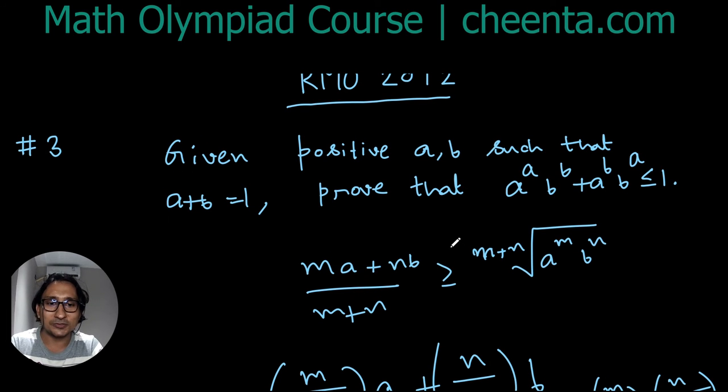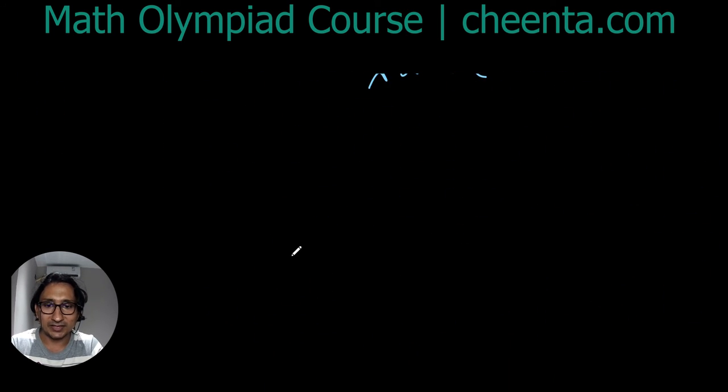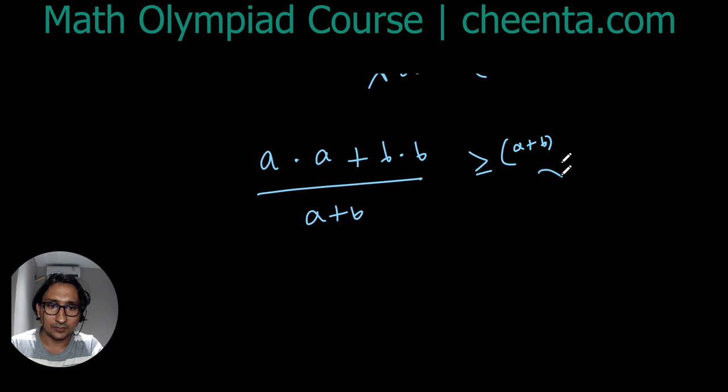Now we can see how this could be useful in our case because a times a plus b times b over a+b is greater than or equal to the (a+b)th root of a^a b^b. And a+b is 1, so it is actually a² + b² is greater than or equal to a^a b^b.